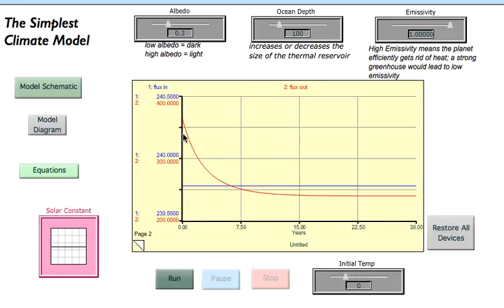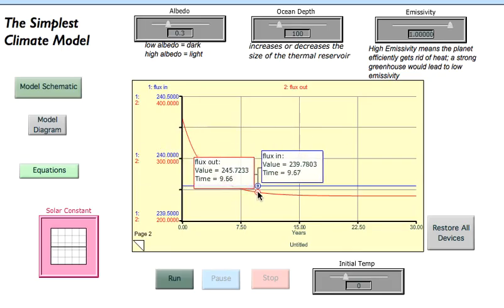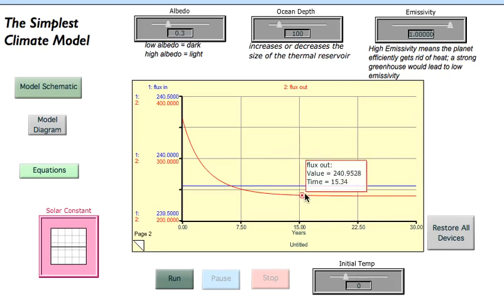And that continues until eventually—watch that energy flux out—it eventually gets down to about 240. So at this point in time, those two have exactly the same value, the energy in and the energy out. When the energy in and the energy out have the same value, then our model is in what we call a steady state, and the temperature won't change.